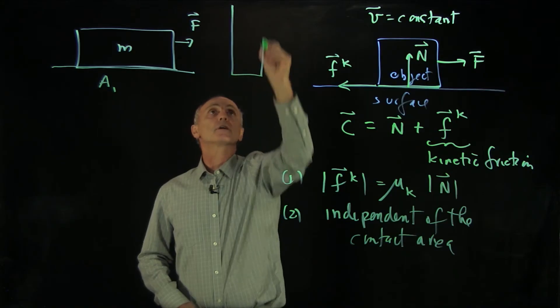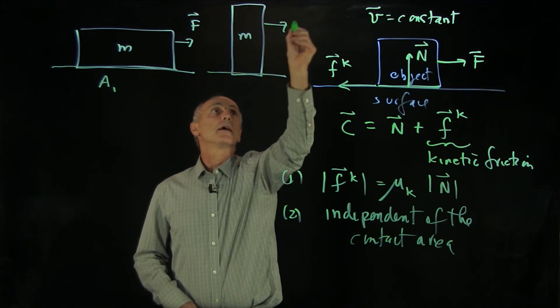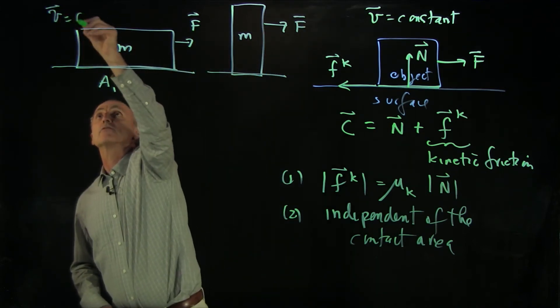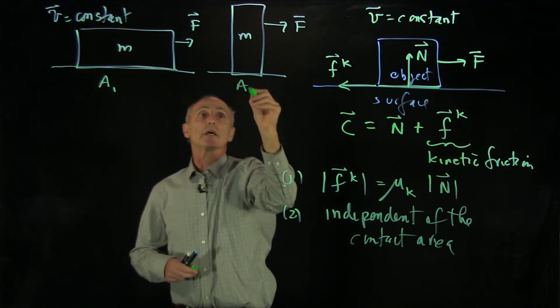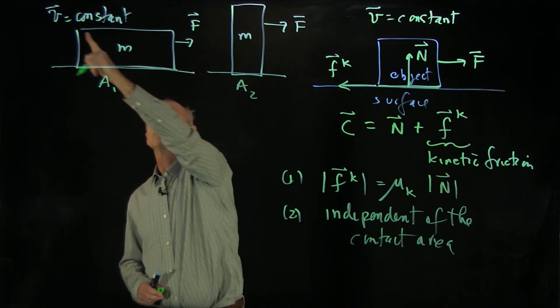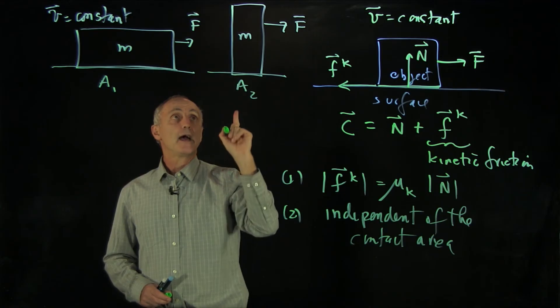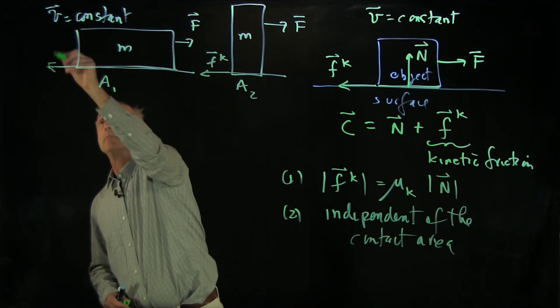And we have a similar object, the same mass, on the same surface. And both objects are moving at a constant speed. Now these objects have different areas of contact, A1 and A2. But the force necessary to move the object at the constant speed is the same. And because of that, the kinetic friction is the same.